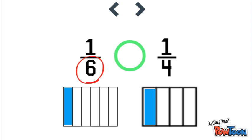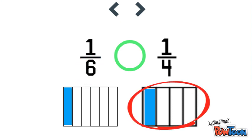Now remember, the bigger the denominator actually means the smaller the fraction. And we see that here because one fourth has a greater amount shaded in than one sixth. So we'll use the symbol that is opening its mouth towards one fourth. And we'll read this as one sixth is less than one fourth.